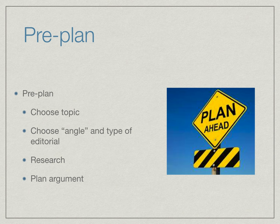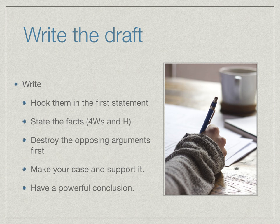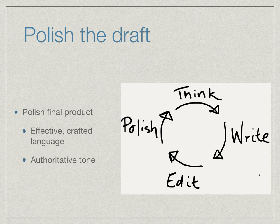From there, you write your draft. You generally want to hook your audience in pretty quickly, state the facts, take down the other arguments, make and prove your case, and have some sort of powerful conclusion at the end. For an editorial especially, it tends to be short and punchy — you really want to get their attention quickly. Finally, you polish your draft: you improve it, remove words, make it shorter, make it punchier, make it more authoritative, and make it appeal to your audience as well as you can.